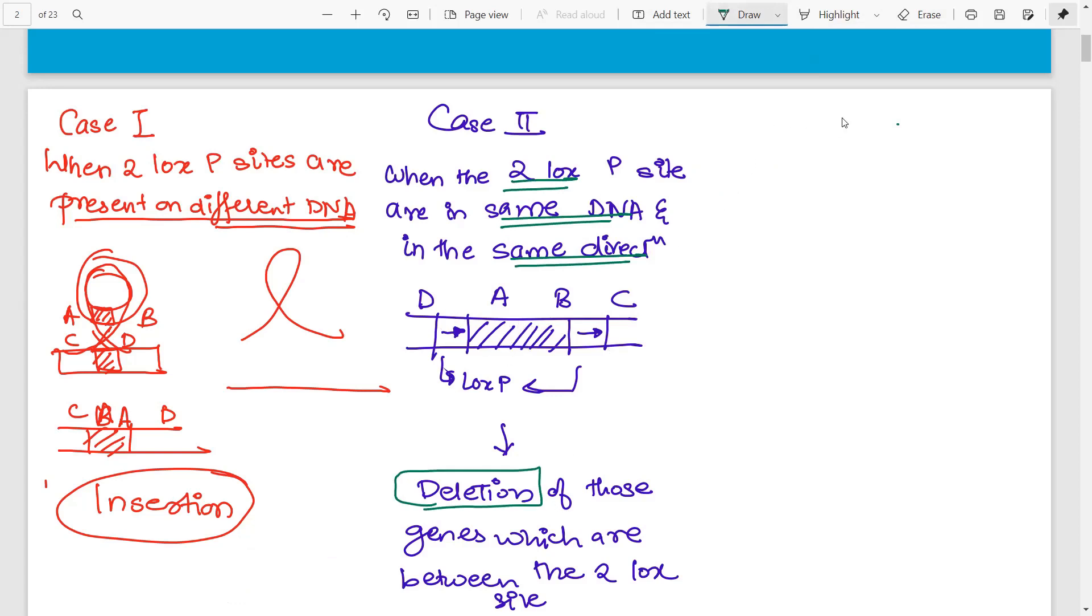Now let's move on to Case 3. Case 3 is when two LOXP sites are in the same DNA but they are in the opposite direction. What will happen if they are in the same DNA and opposite direction?